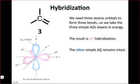In this case, the other simple AO - this 2p orbital in blue - remains intact. Importantly, notice that the three hybrids form a trigonal planar structure, which we'd expect from VSEPR theory, and the remaining 2p orbital is perpendicular to the plane formed by the hybrids.